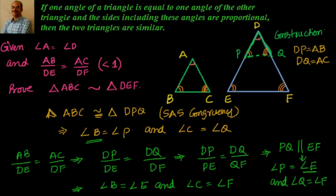But we know that angle B equals angle P, which gives us angle B equal to angle P equal to angle E, meaning angle B equals angle E. And similarly, angle C equals angle Q equals angle F. So this is nothing but AAA similarity, by which we can say that triangle ABC and triangle DEF are similar to each other.